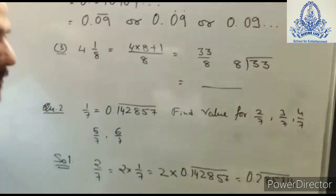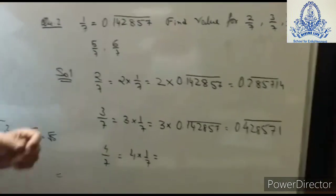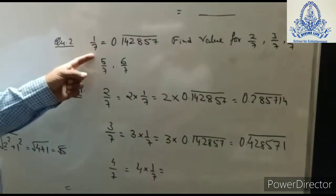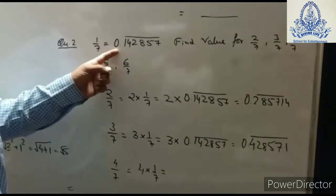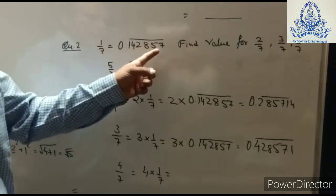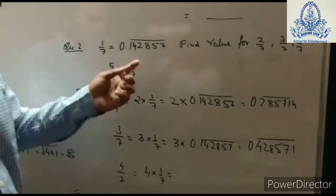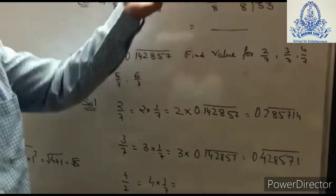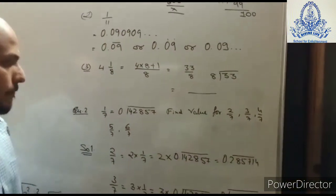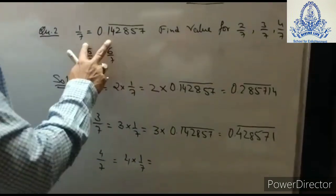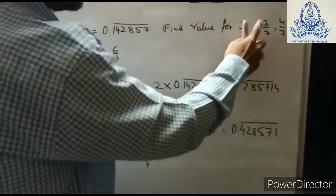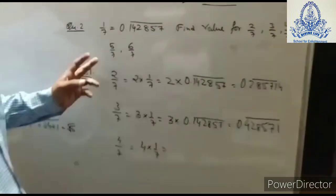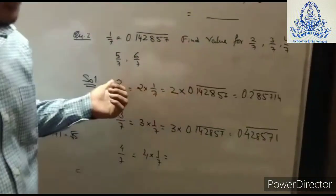Question number 2 states that 1/7 equals 0.142857 with a whole bar — meaning those digits repeat. Using this given value, we have to find 2/7, 3/7, 4/7, 5/7, and 6/7.